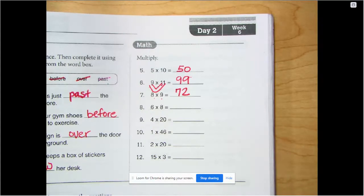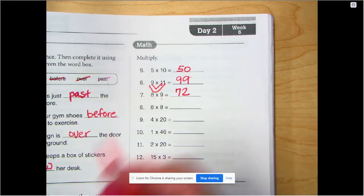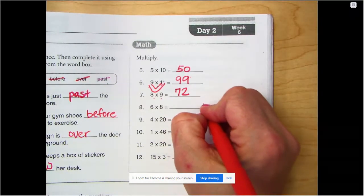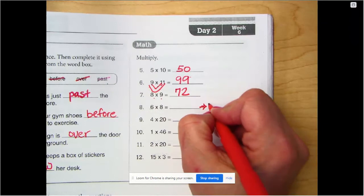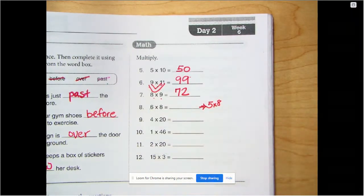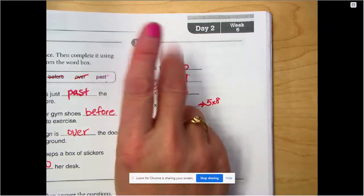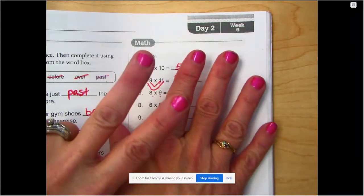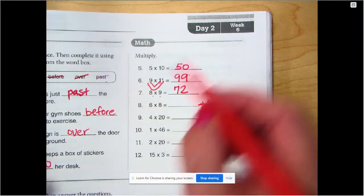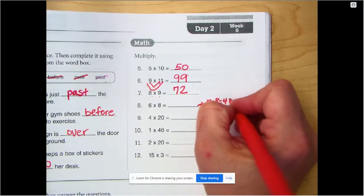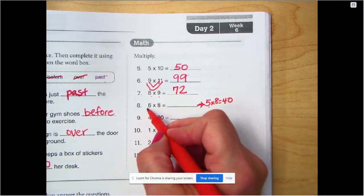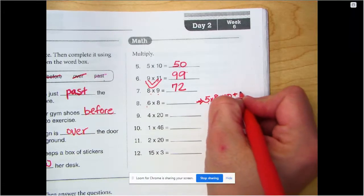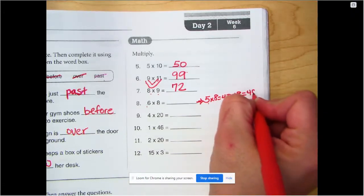Six times 8. If you know your 6s or your 8s, then it might come right to you. But if you don't, let's try this. This is called distributive property. We haven't gotten to it yet, but we will soon. If we know 5 times 8, because we can skip count by 5, 8 times 5, 10, 15, 20, 25, 30, 35, 40. So if I know that 8 times 5 is 40, I need one more 8 because it's 6 groups. So 40 plus 8 is 48.